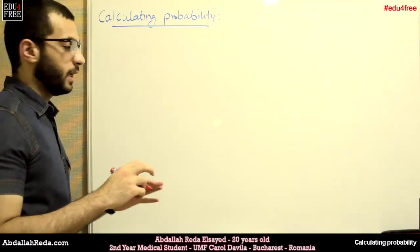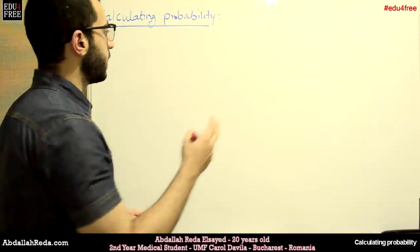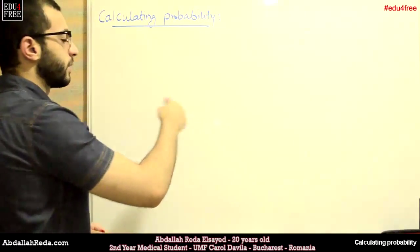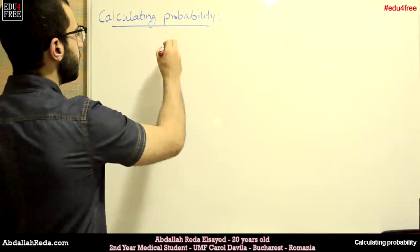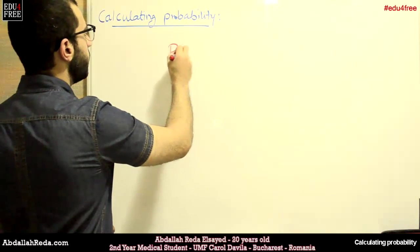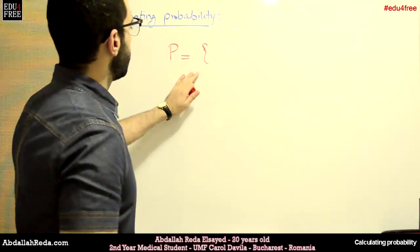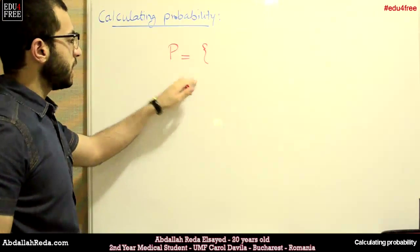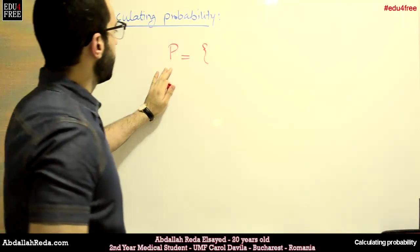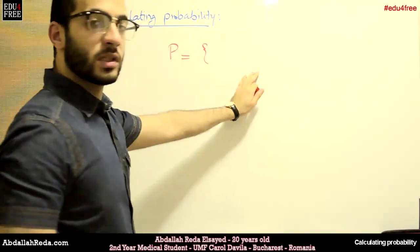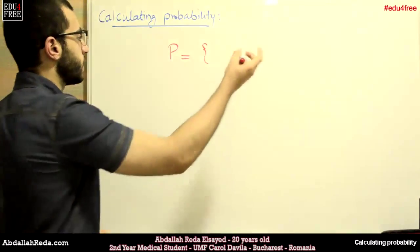Let's say that we have a sample set for a random experiment, like throwing a dice. The probability will equal, we have the sample set, let's name it P, and it will have elements ranging from 1 to 6.